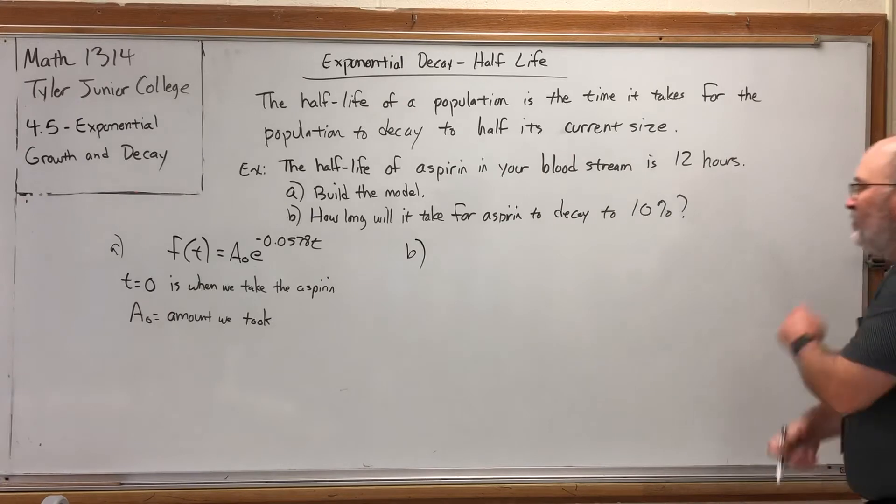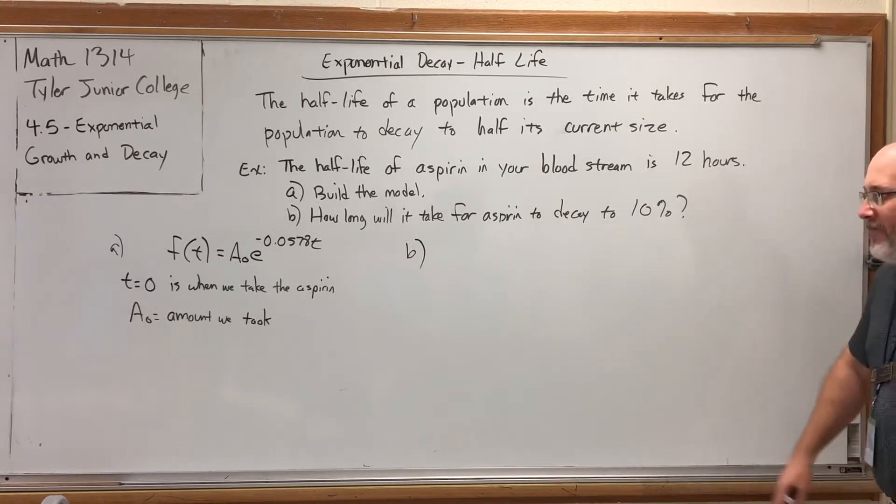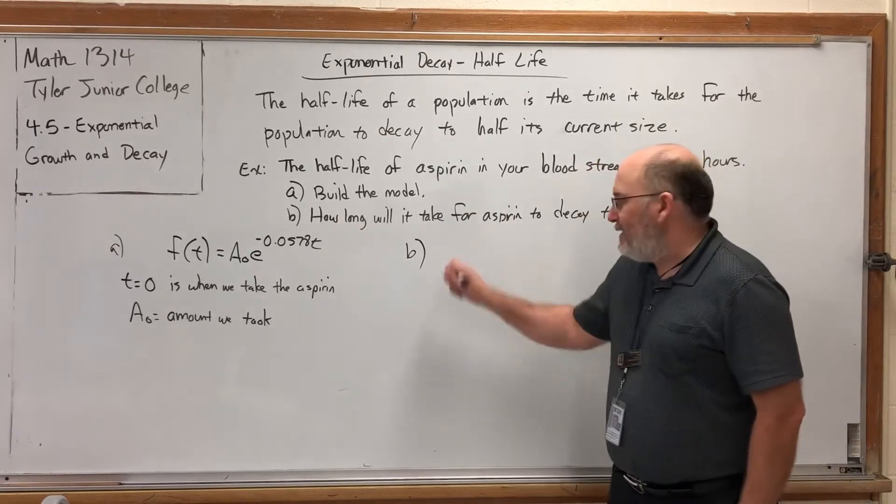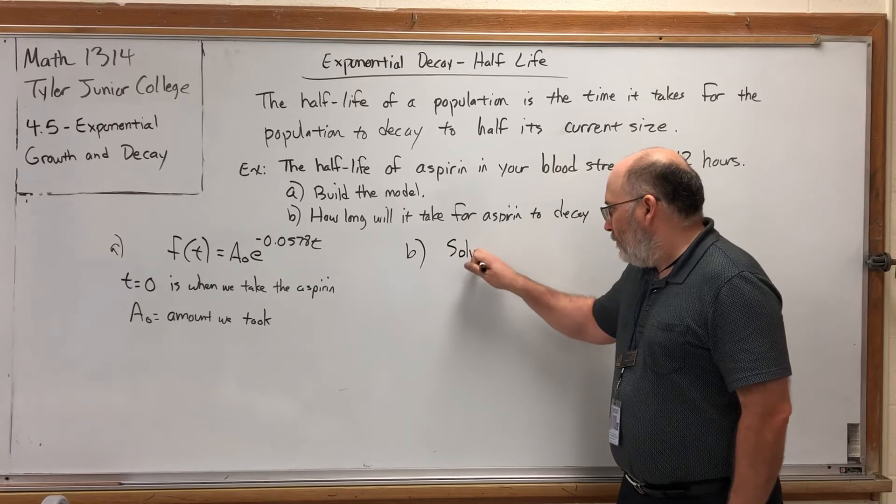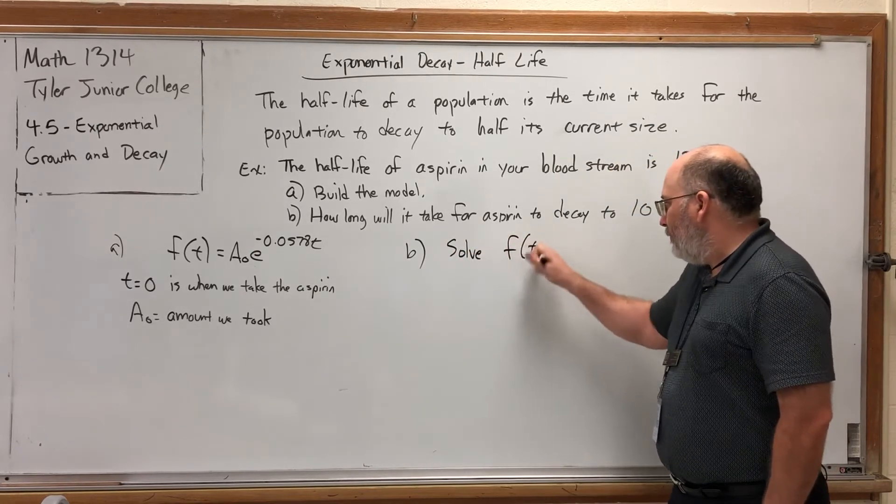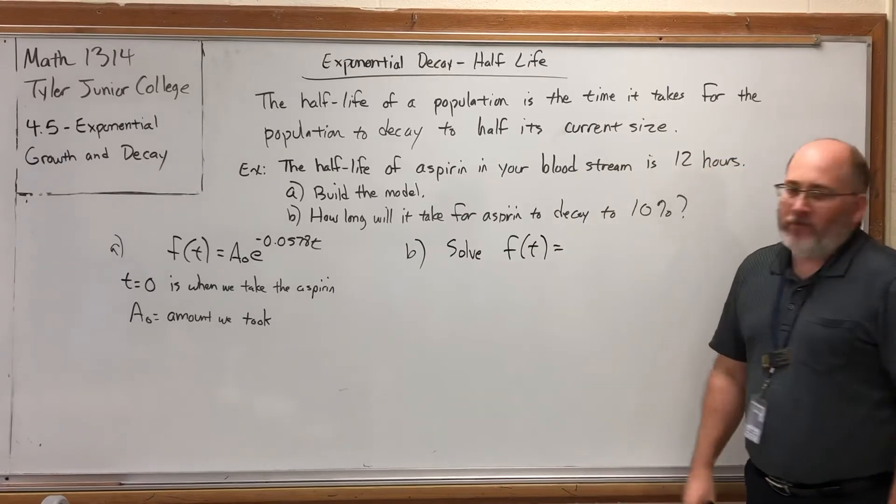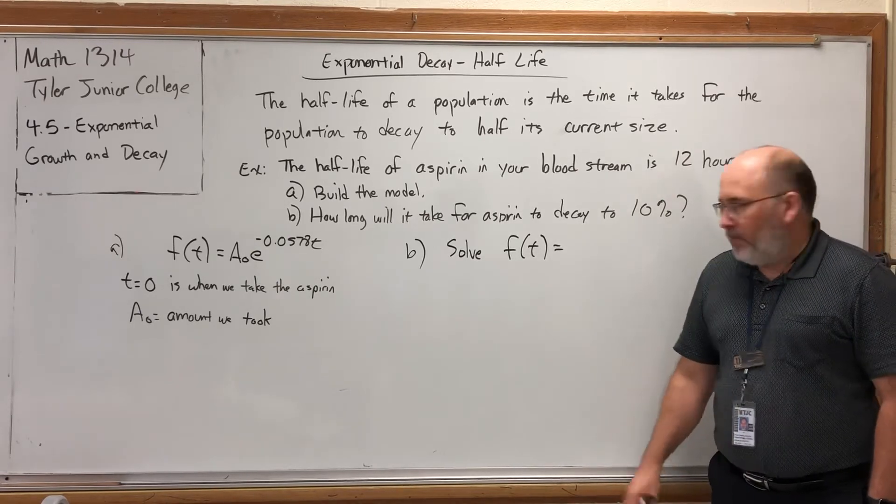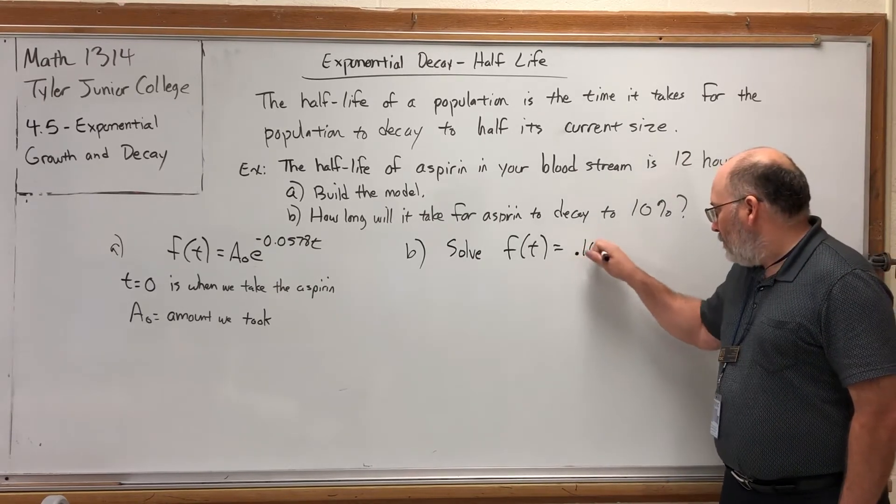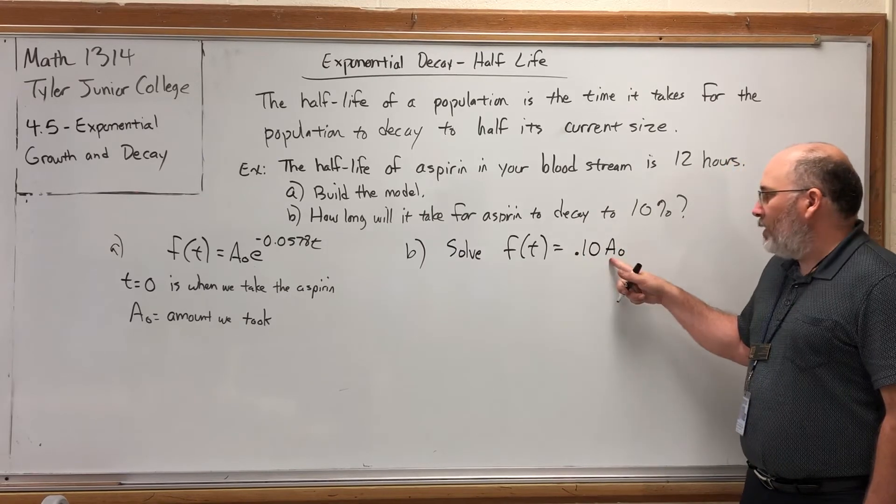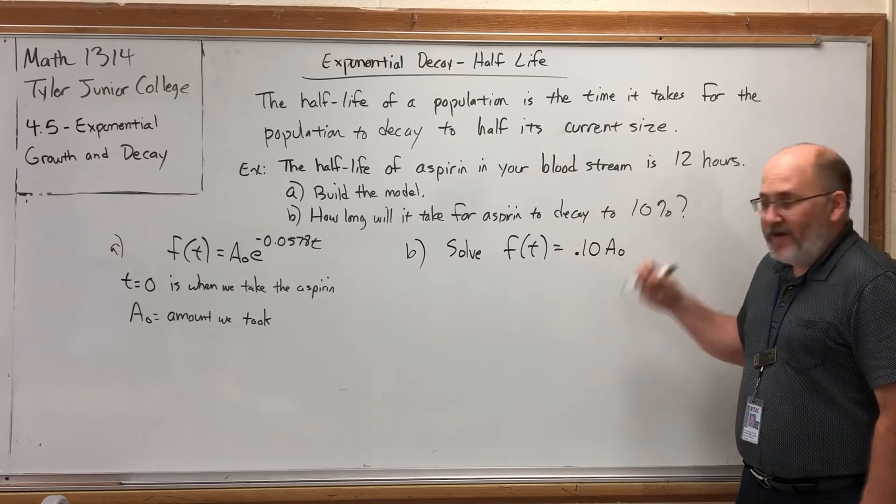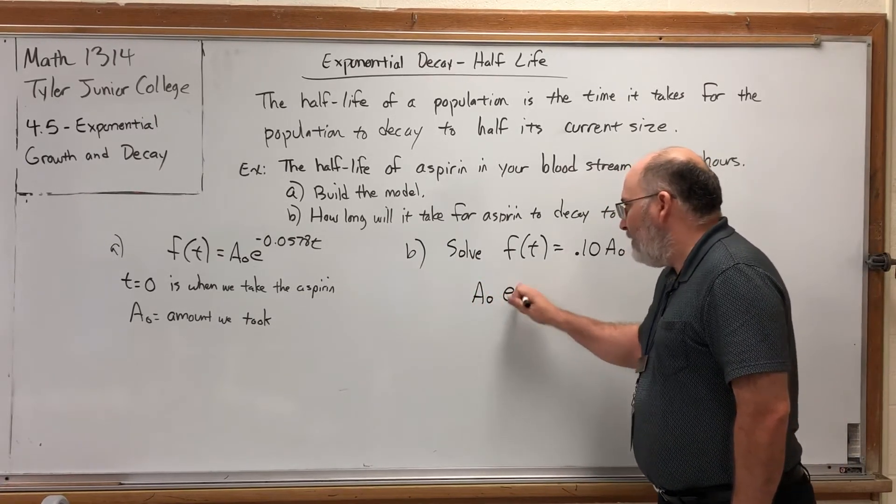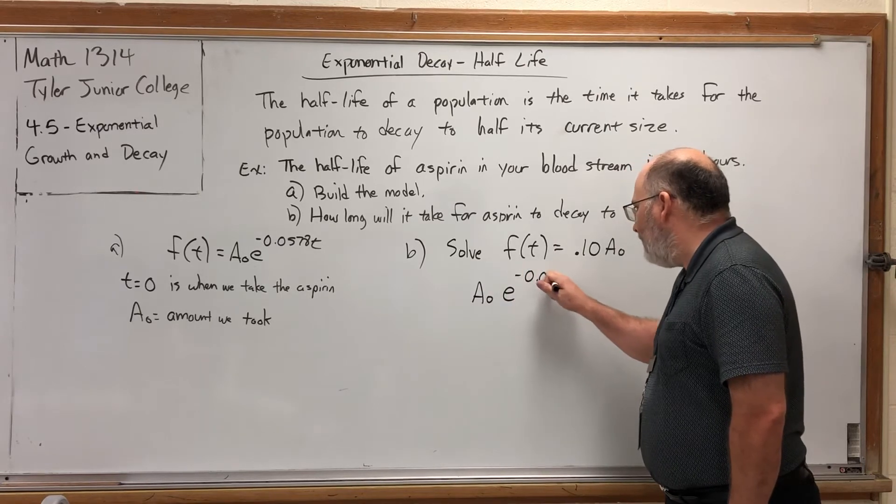Let's go to part B. How long will it take for aspirin to decay to 10%? Again, we don't have an initial amount, but we don't need it. Since we're being asked how long it will take, we're being asked to solve for T. So we don't know the input. But we know the output needs to be 10% of what we started with. How do you find 10% of something? You change the percent to a decimal and multiply. 10% of what we started with is what we're looking for after a certain amount of time.